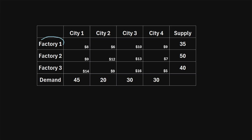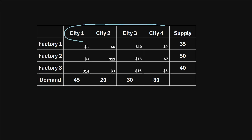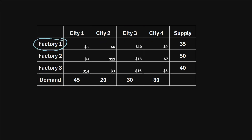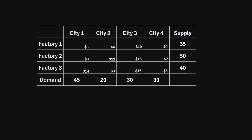We have three factories that produce some good and four cities that have a demand for that good. Factory one is able to produce 35 units, factory two is able to produce 50 units, and factory three is able to produce 40 units. City one has a total demand of 45 units, city two has a demand of 20, city three has a demand of 30, and city four has a demand of 30.